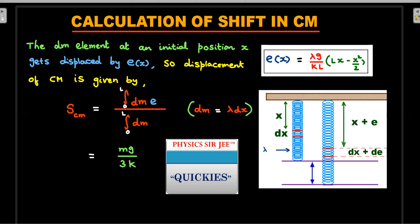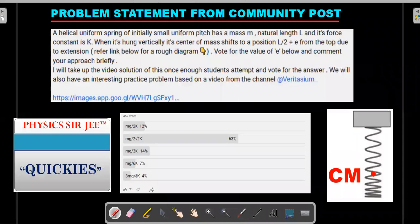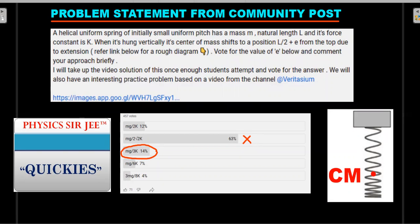mg/3k is the correct answer. If you check the options, it was one of them, but it was not the popular opinion of the students — 63% of them got it wrong. So mg/3k is the correct answer. Congratulations to those who got it right. Some of them got it correctly using another method, which I'll put as the practice problem.